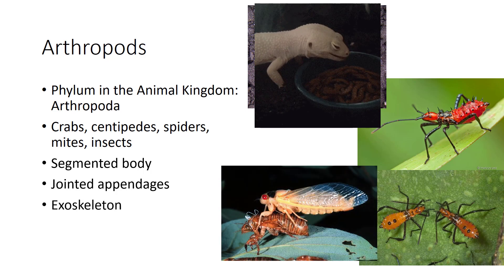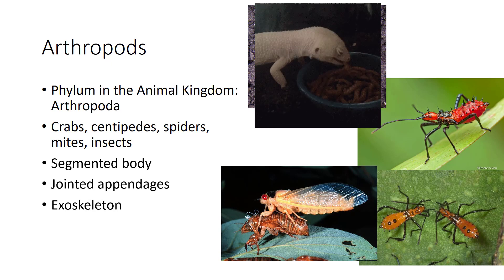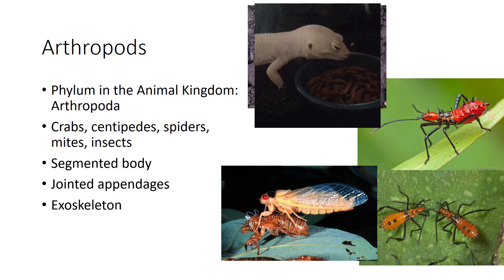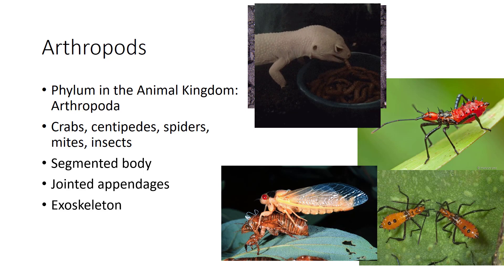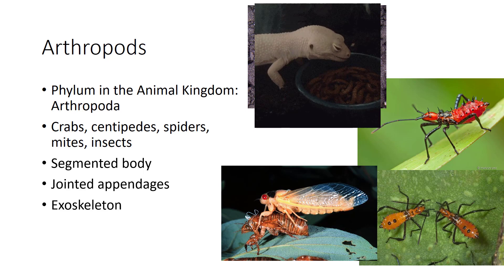Third, all arthropods have a chitinous exoskeleton, which is periodically shed and renewed as the animal grows. You can see that in this cicada that is reaching adulthood. You will find these very cool-looking exoskeletons all over the forest when the cicadas are singing their high-pitched squeal.